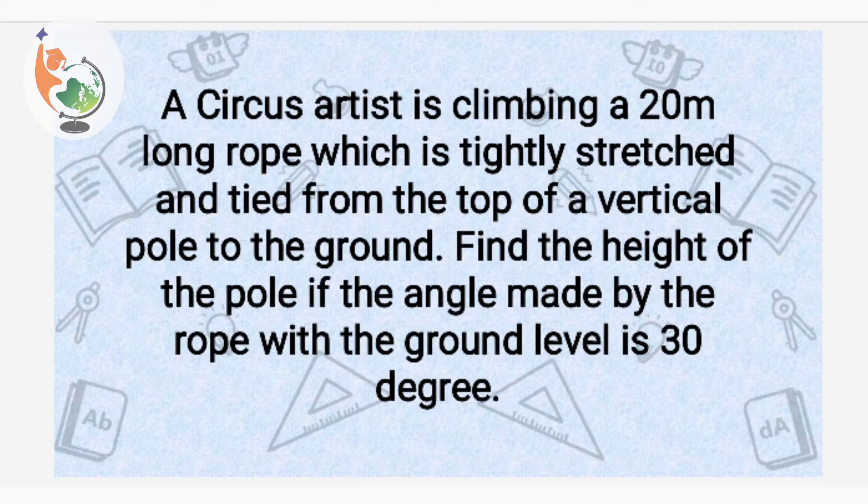The question is: a circus artist is climbing a 20 meter long rope which is tightly stretched and tied from the top of a vertical pole to the ground. Find the height of the pole if the angle made by the rope with the ground level is 30 degrees.